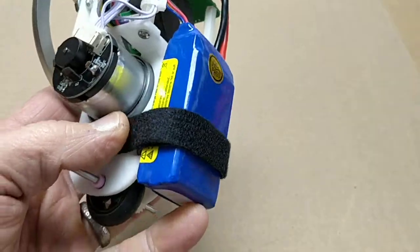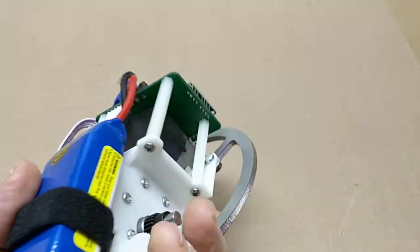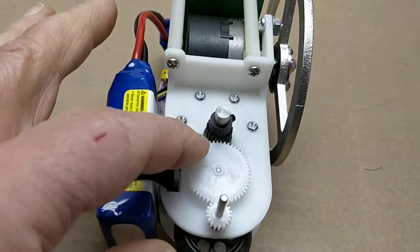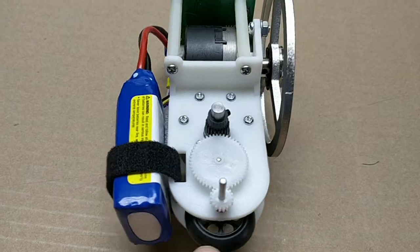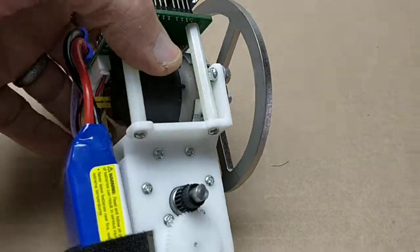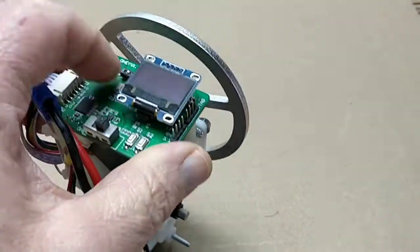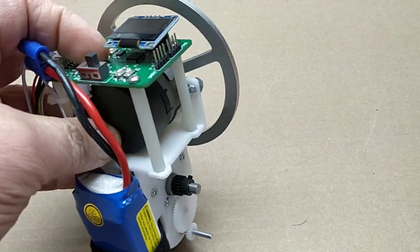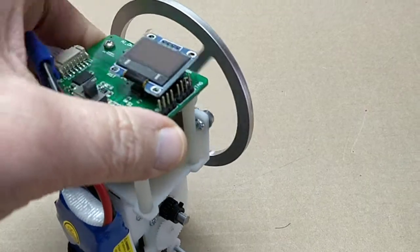Anyway, it has a motor here which drives these gears to the single wheel. It balances on one wheel. And to keep it from tipping over, there is another motor here which drives the reaction wheel.